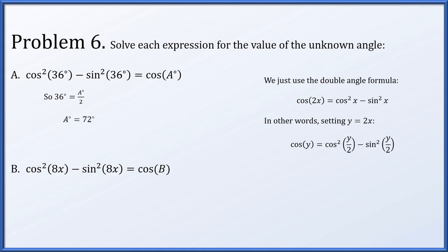So a is 72 degrees. In the second part, if we set 8x to be b over 2, we get cosine squared of b over 2 minus sine squared of b over 2. According to the identity, that is just cosine of b, which is 16x.